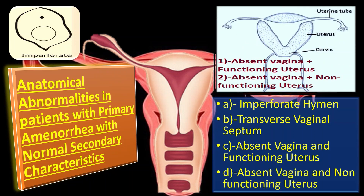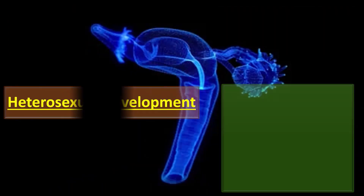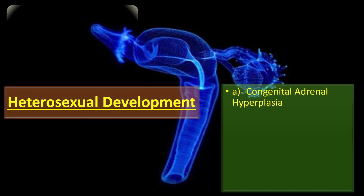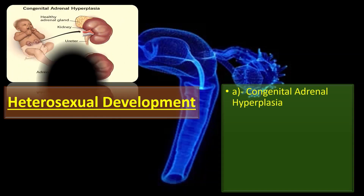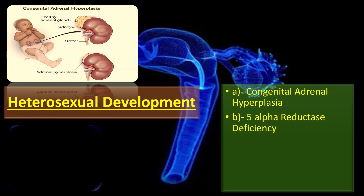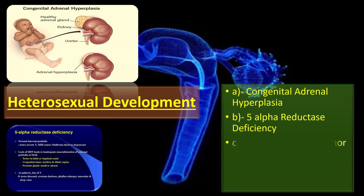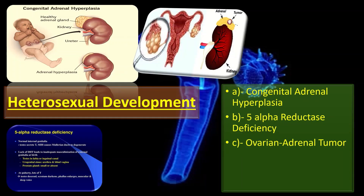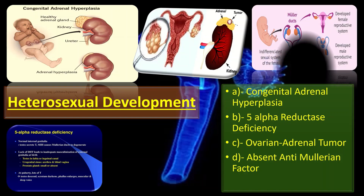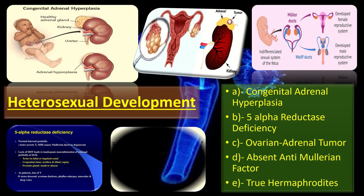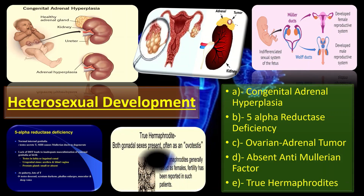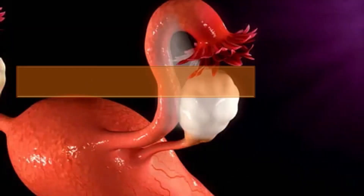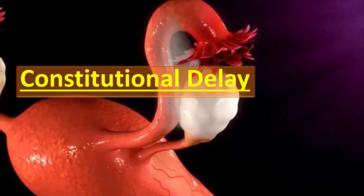Also included is absent vagina with a non-functioning uterus. Coming to the third main group, heterosexual development, that includes congenital adrenal hyperplasia, 5-alpha reductase deficiency, ovarian adrenal tumour, absent anti-Müllerian factor, and true hermaphrodites. The last group is constitutional delay.